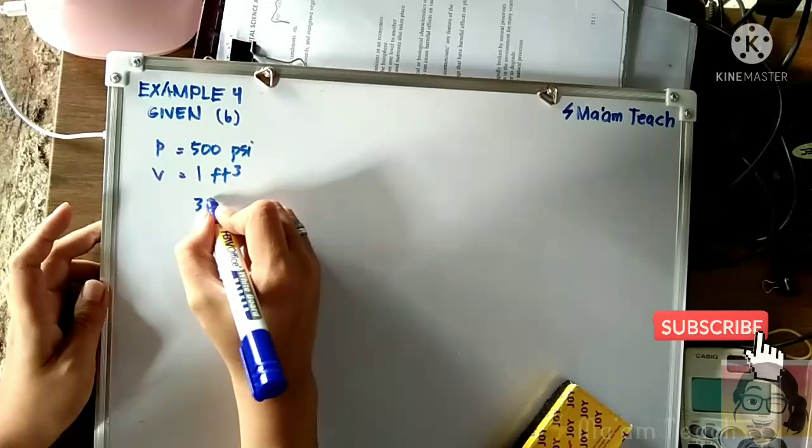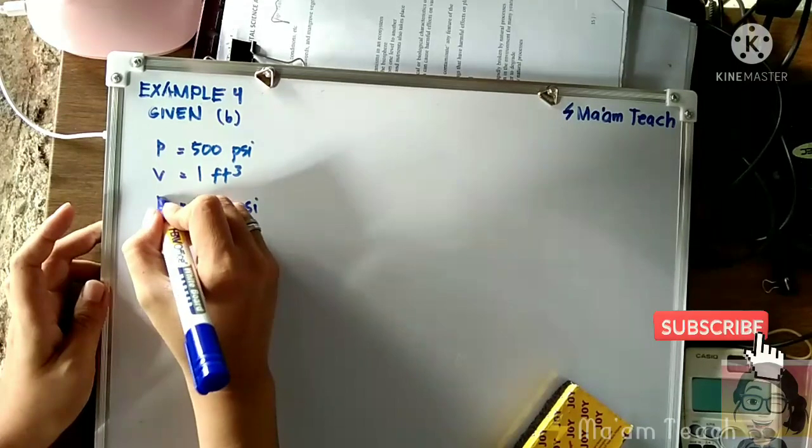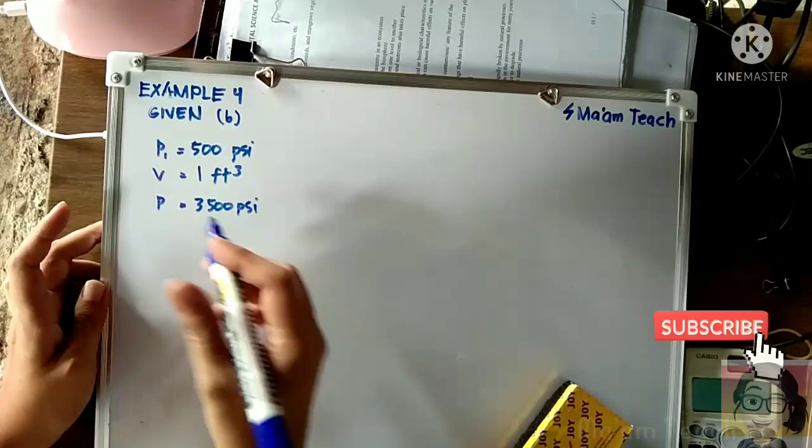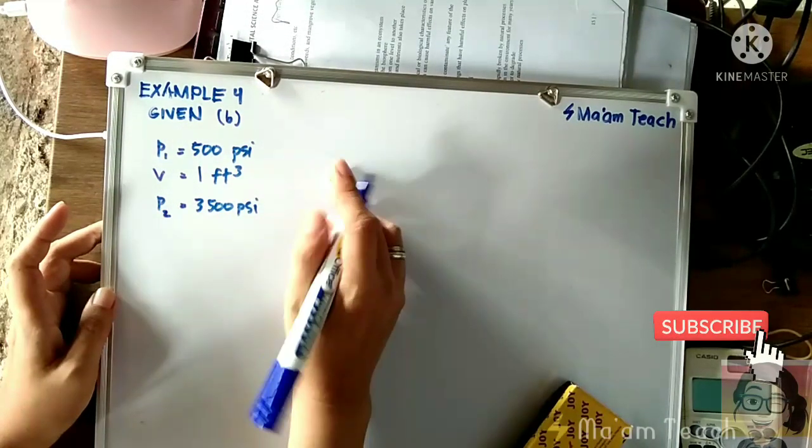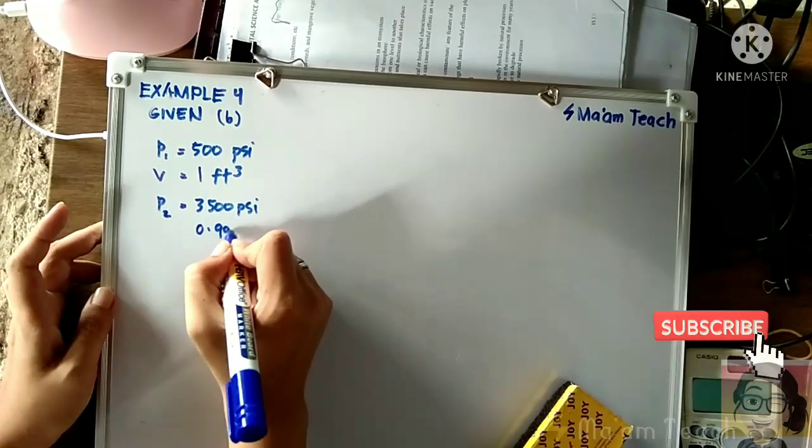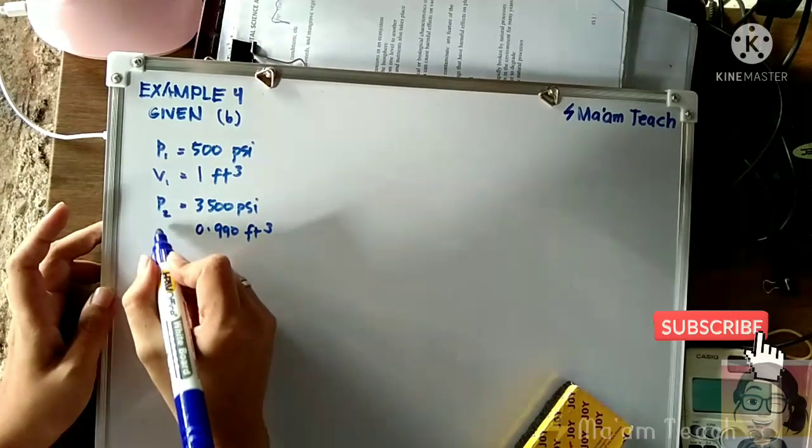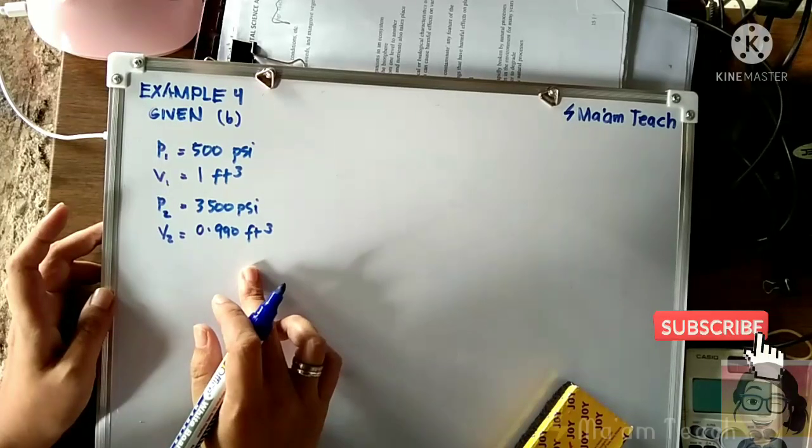This 3,500 psi is another pressure, so that means this is our initial pressure. Let's name it as P sub 1, and 3,500 psi as our P sub 2. We have volume which is 0.990 cubic foot - this will be our V sub 1 and this will be our V sub 2. We are asked to solve for the bulk modulus of elasticity.